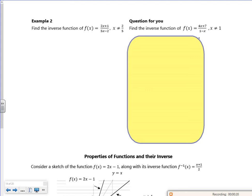It says find the inverse function for this equation. Step one: make it y equals. So I've got y = (2x+1)/(5x-2). It's a massively complicated question. Step two...